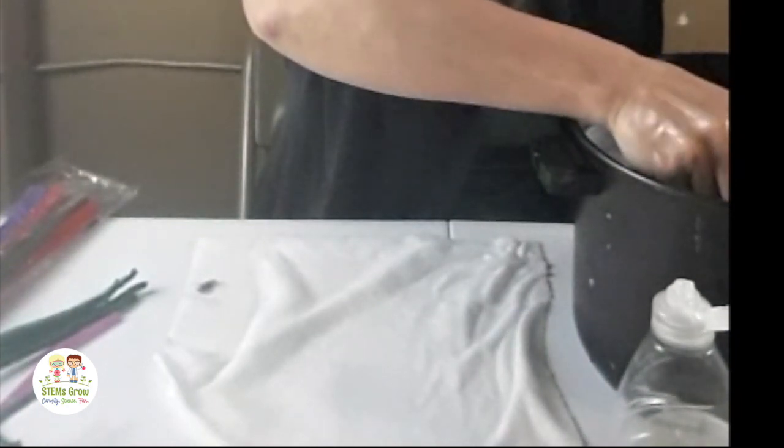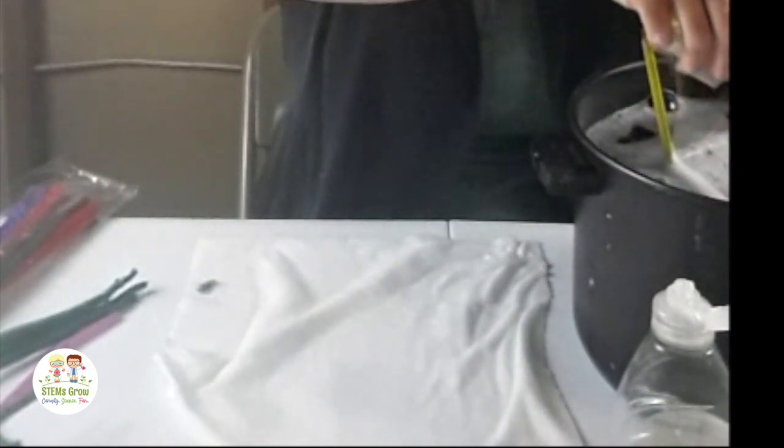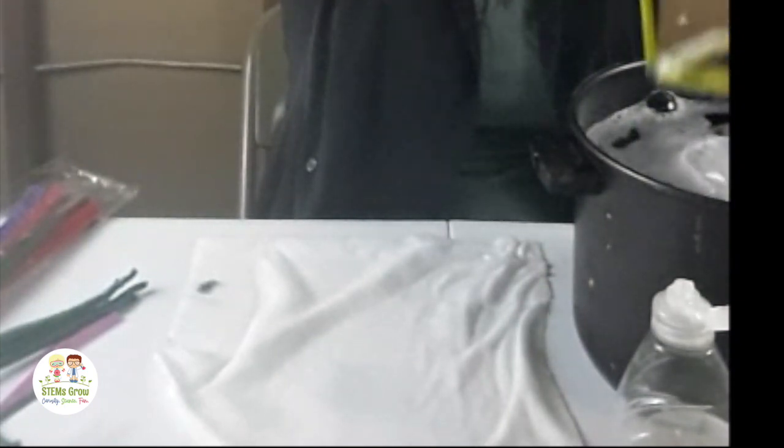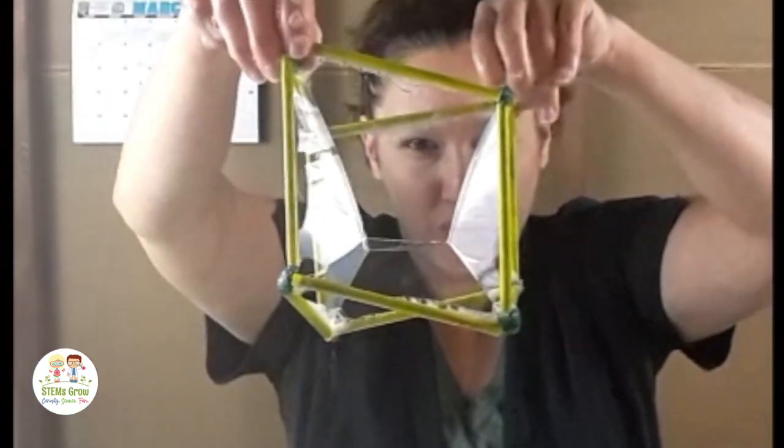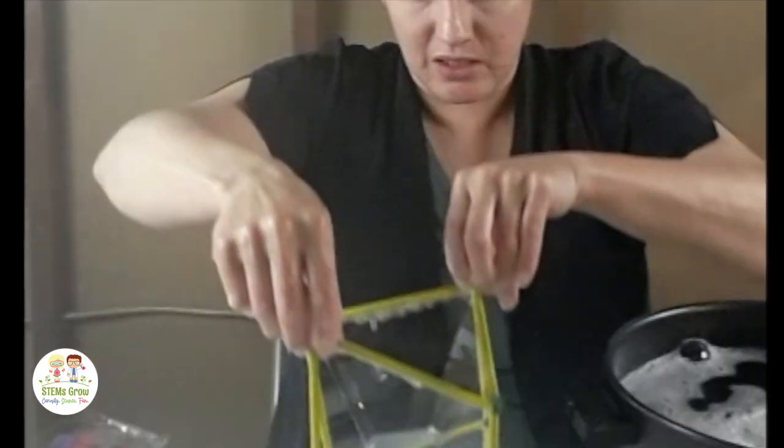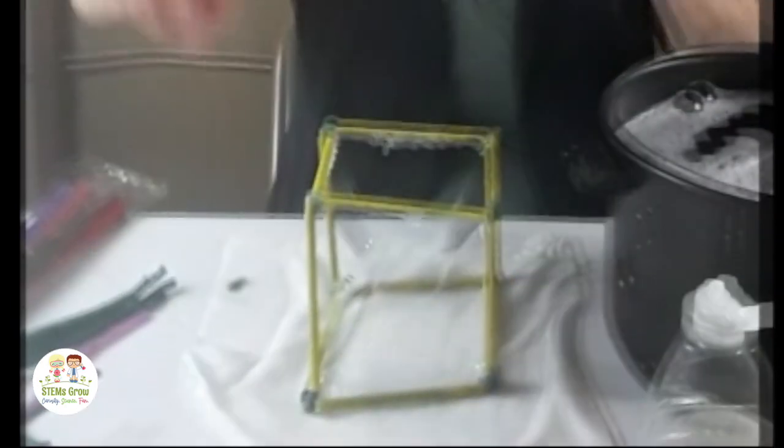When it comes out, sometimes it takes a couple of tries. You should see that there's almost a line in there that kind of looks like a square already.